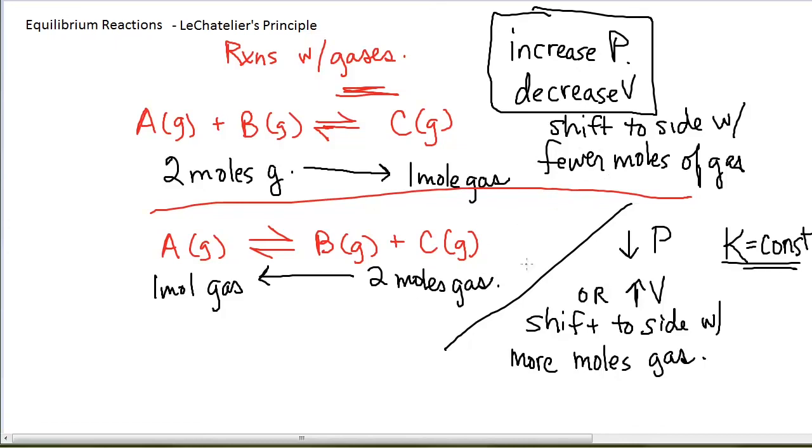If you're changing the volume, then everybody's concentration is going to adjust as you shift. And so the shift is to get the equilibrium constant back to the same numerical value.